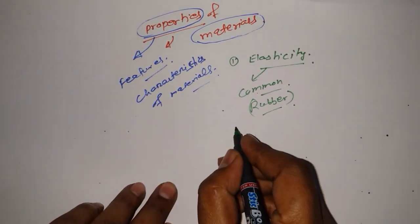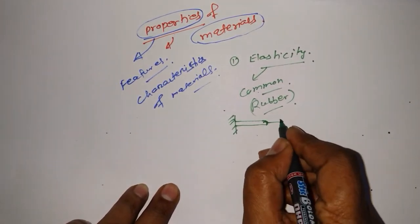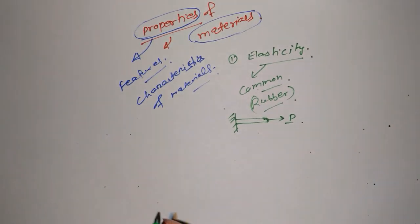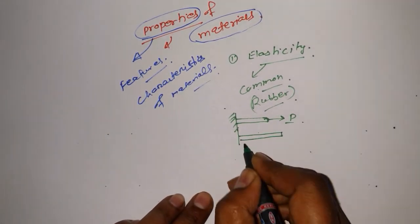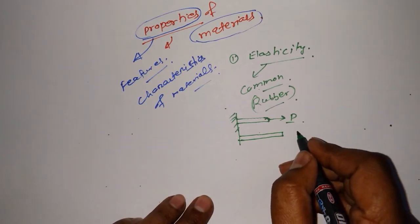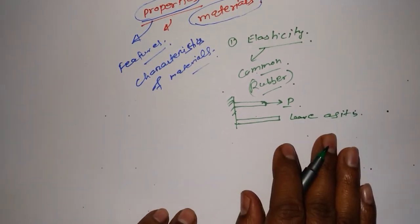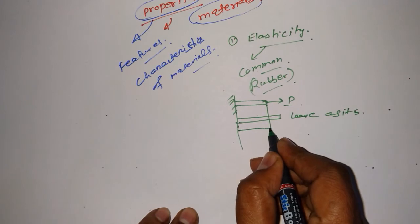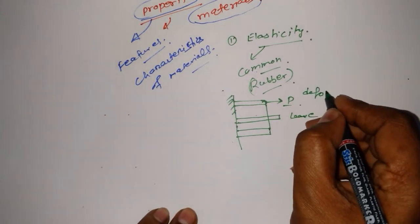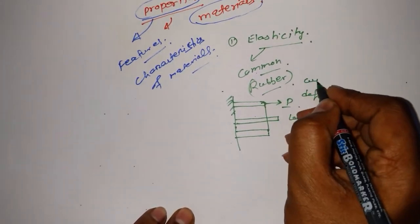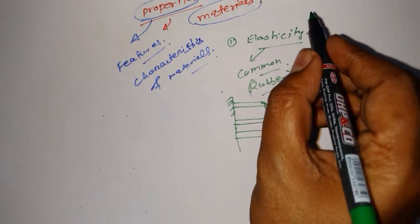Suppose we have a body that is fixed on one side and we are pulling it, putting some force on it, and because of pulling, the body's length has been increased. After increasing the length, we just leave it — we do not pull the body anymore. If the body gains its original position without any deformation, then this property of the material is known as elasticity.